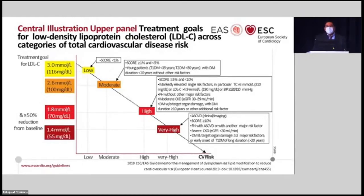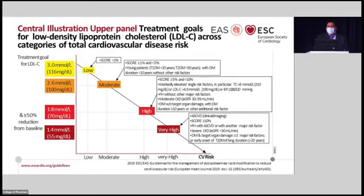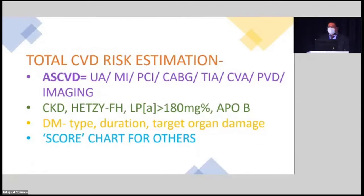For the very high risk category: anybody with established atherosclerotic cardiovascular disease belongs here, as well as certain diabetics with more than 20 years' duration or target organ damage, severe CKD, and familial hyperlipidemias with atherosclerotic disease. Any ischemic heart disease patient falls into the very high risk category and needs a target LDL of 55. Atherosclerotic cardiovascular disease encompasses unstable angina, MI, PCI, CABG, TIAs, CVA, peripheral vascular disease, and imaging-proven disease, as well as CKD and heterozygous familial hypercholesterolaemia.